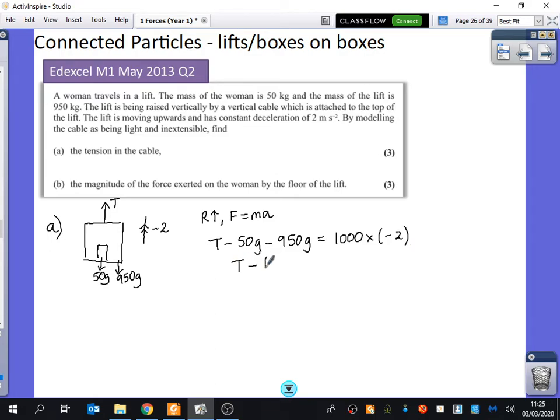So that must mean that T minus 1000g is equal to minus 2000. I'm going to add 1000g to both sides. So that's minus 2000 plus 1000g. So we have 7800 newtons. 1000g is 9800.